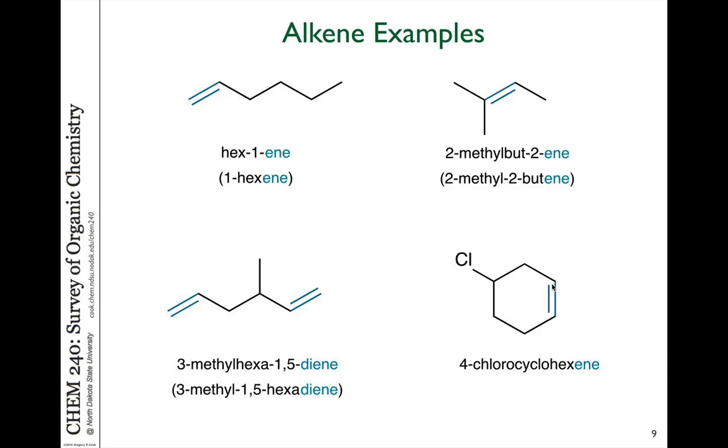So when we name alkenes, what we do is we take the A-N-E ending of an alkane for the longest hydrocarbon chain that we have and replace that with E-N-E to indicate the presence of a double bond.